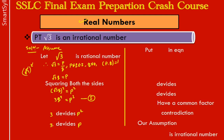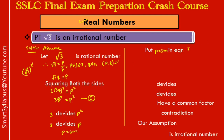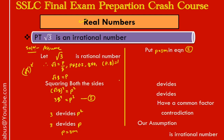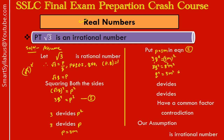Since 3 divides p, we can write p = 3m, where m is some integer (because p/3 = m). Now substitute p = 3m into equation 1: 3q² = (3m)² = 9m². Dividing both sides by 3: q² = 3m².